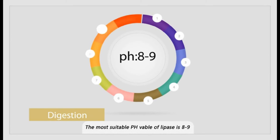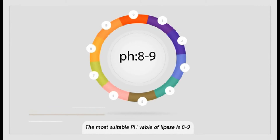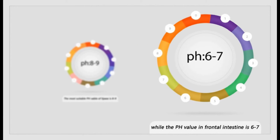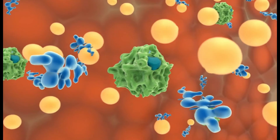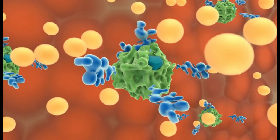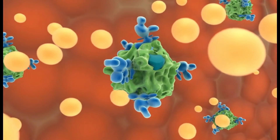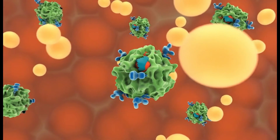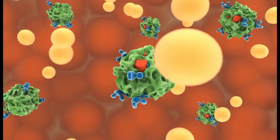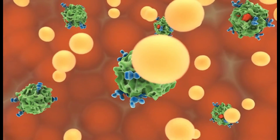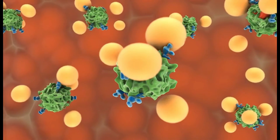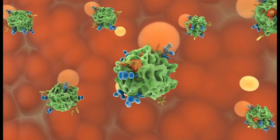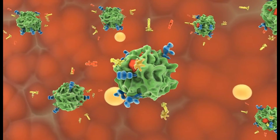For digestion, the suitable pH value for lipase is 8 to 9, but the pH value in the intestine is 6 to 7, so lipase doesn't work well under this condition. Lipase can be activated by bile acids. When they combine together, bile acids can open the cap and release the catalytic elements. Meanwhile, the structure of lipase is also changed, which lets fat droplets contact with the catalytic site. Under this way, fat would be hydrolyzed into fatty acids, glycerin, and monoglyceride.